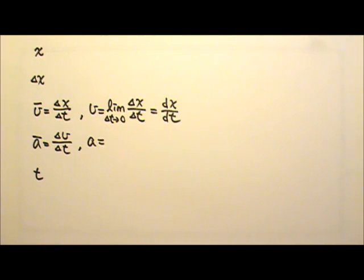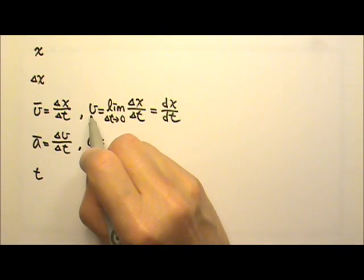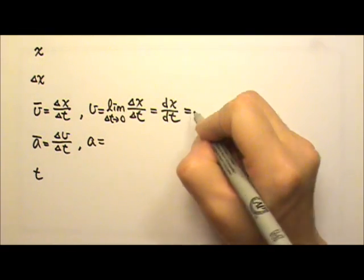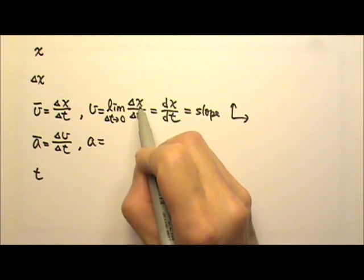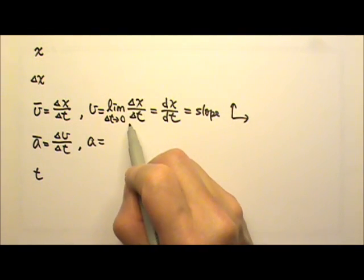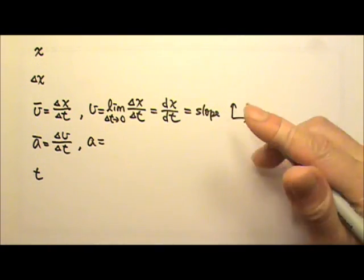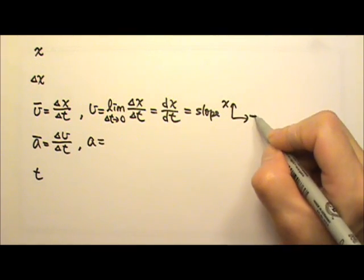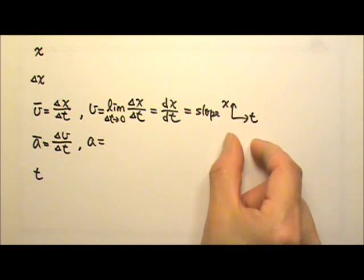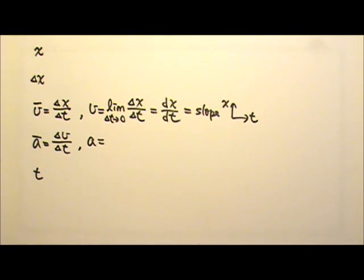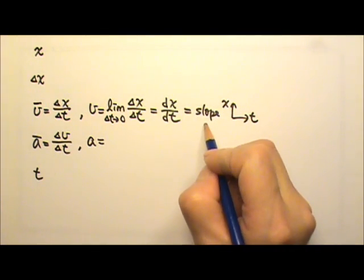If we have a graph problem, because we are dividing, this is the rise over run. So the instantaneous velocity would be the slope of a graph. The rise would be delta x and the run would be delta t, so it must be an x versus t graph. Please remember that the derivative is related to the slope of a graph.